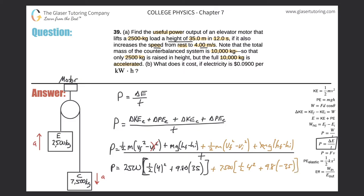All of this is divided by the time of 12 seconds. Calculating this out, we get a value of negative 1.36 times 10 to the fifth watts.